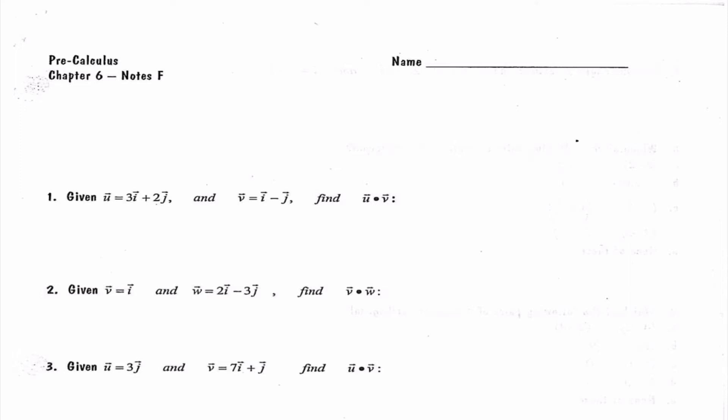Hey guys, it's Ms. Miklos here, and we are learning our last section of Chapter 6. Today we're continuing to learn about vectors, and specifically we're going to learn one skill about vectors: how we multiply two vectors together. So far we've just explored scalar multiplication, which is when we multiply a number or a constant by a vector, and we just distributed that. But today we're going to examine what we do if we're multiplying a vector times a vector.